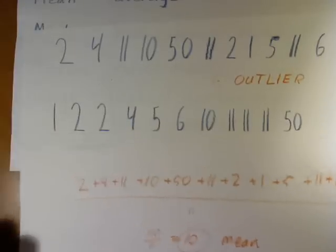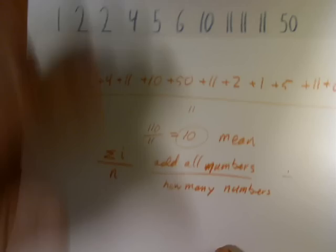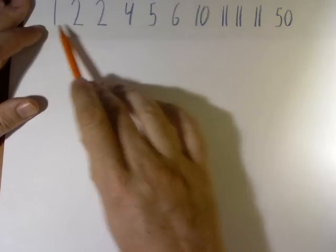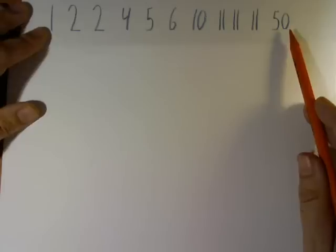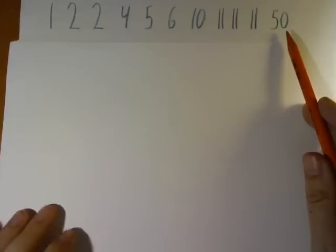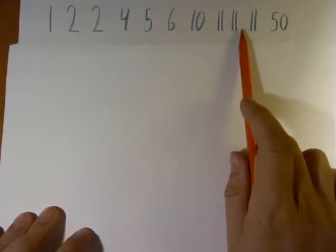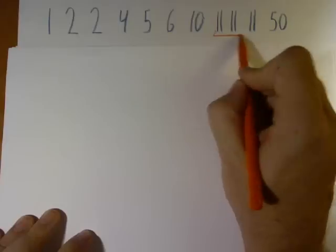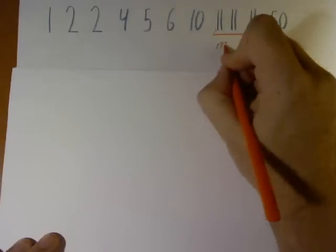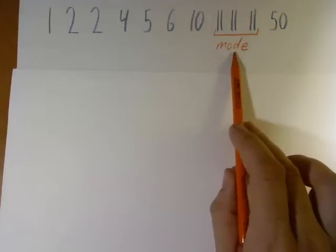Now, the mode. For that, we're going to need to take our numbers and write them in order. In this way, it's very easy to see both what the median and the mode are. Our mode is our most common number. We have two 2's, but we have three 11's — that makes 11 the mode. Note that there may be more than one mode; modes are not necessarily unique, we can have more than one.